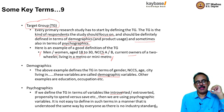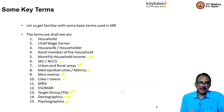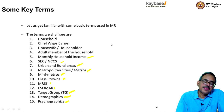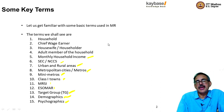To recap, in this session we covered: household, chief wage earner, housewife or householder, adult, monthly household income, socio-economic class, NCCS, urban and rural definitions, metropolitan cities, mini metros, class one towns, MRSI, ESOMAR, target group, demographics, and psychographics. That concludes this chapter. Thank you — until we meet again, bye for now.